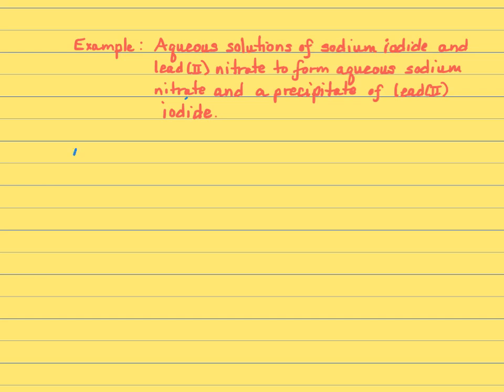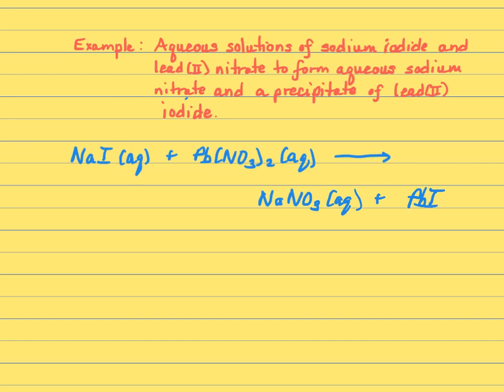So sodium iodide is NaI. Now you know why you spent all this time learning how to write formulas. It says it's aqueous. That means we've dissolved it in water and lead two nitrate is Pb(NO3)2. Also aqueous. Got our arrow and we're going to make sodium nitrate, so NaNO3, which is aqueous and PbI2. So precipitate means it's a solid. So I've written my reaction. I've got my symbols in there. We just need to balance it.